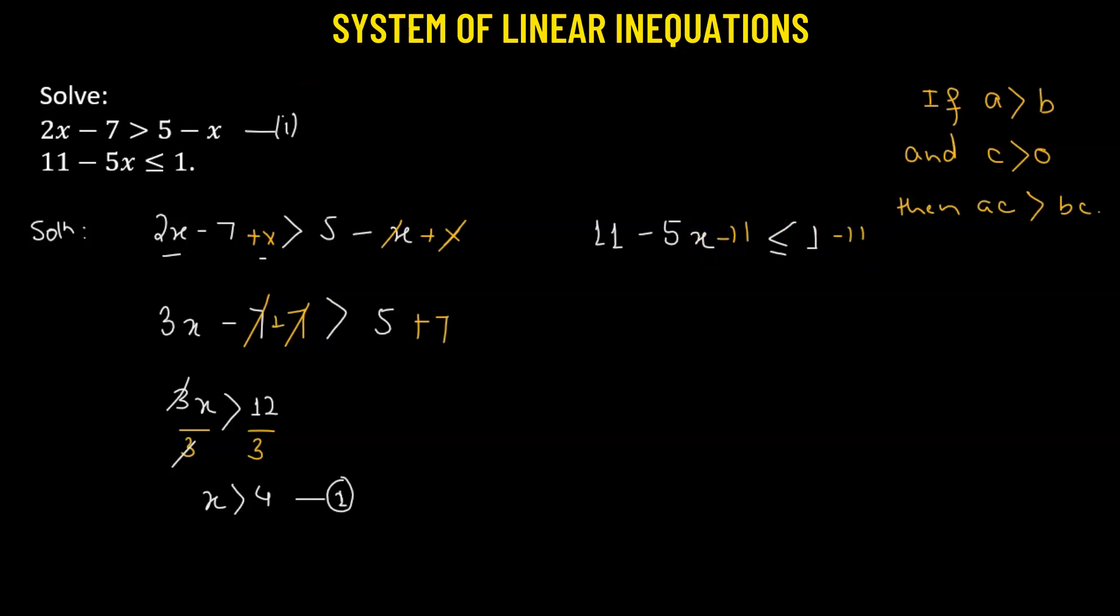That leaves us with -5x ≤ 1 - 11, which is -10. We want to make the coefficient of x equal to 1, but we have -5, so we'll divide both sides by -5.